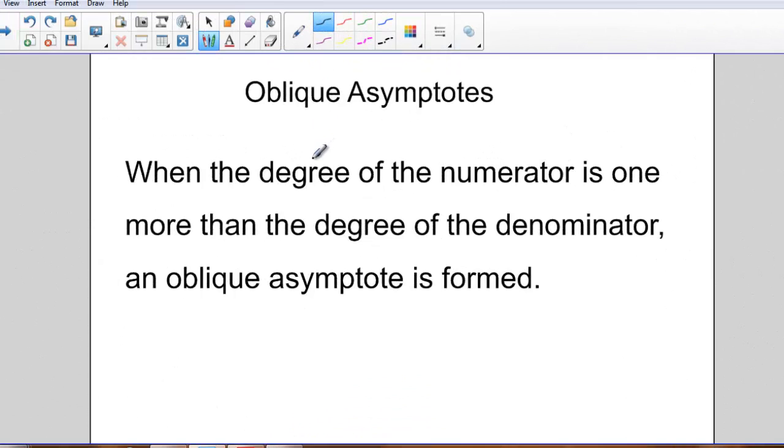In this video, we'll be looking at a type of asymptote called an oblique asymptote or a slant asymptote. Slant asymptotes, oblique asymptotes happen when the degree of the numerator is one more than the degree of the denominator.